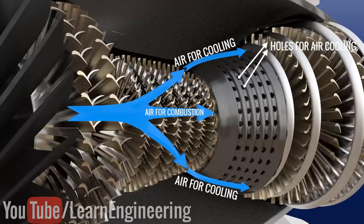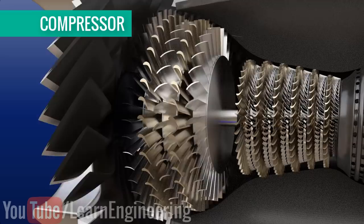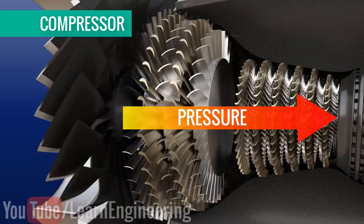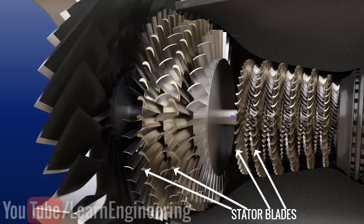Let's zoom into a particular section of this engine: the compressor. The compressor is the part which squeezes the incoming air and greatly increases its pressure — it transfers energy to the fluid. This engine has two compressor units. The stator blades are attached to the casing and they make sure that the compressor rotor blades receive the airflow at the correct angle.